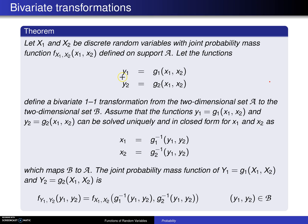Let the functions y1 equals g1 of x1, x2 and y2 equals g2 of x1, x2 define a bivariate one-to-one transformation from the two-dimensional set script A to the two-dimensional set script B.